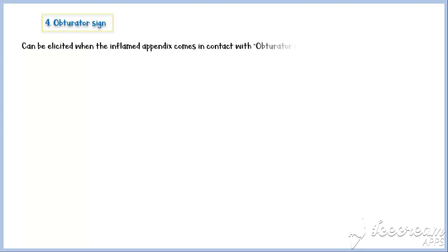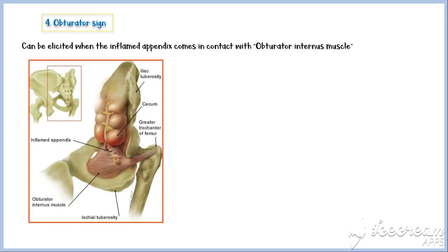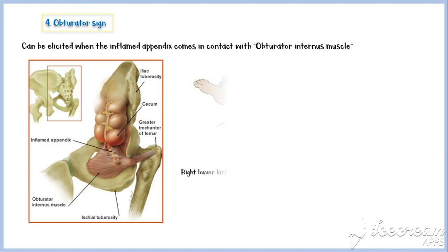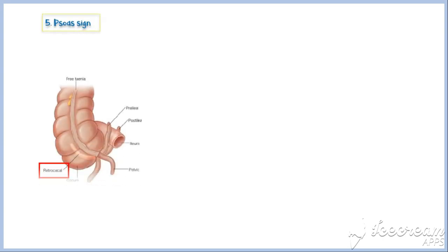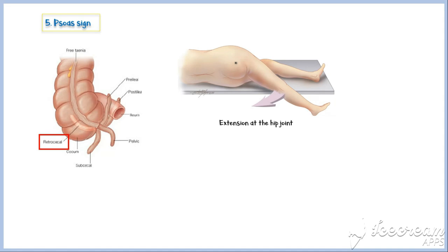The obturator sign can be elicited when the inflamed appendix comes in contact with the obturator internus muscle. To elicit this sign, the patient's right lower limb is flexed at the knee joint, with flexion and internal rotation at the hip joint. The psoas sign can be elicited when the inflamed appendix is located in the retrocecal position, and is elicited by passive extension at the hip joint.